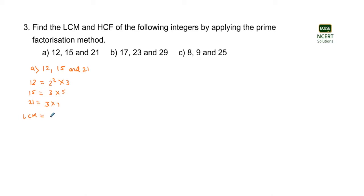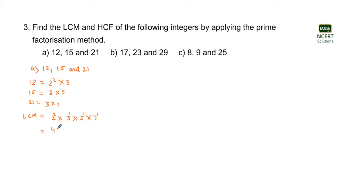The unique prime factors of the three numbers are 2, 3, 5, and 7, each raised to their maximum power. The maximum power of 2 is 2; for 3 it is 1; for 5 it is 1; and for 7 it is also 1. The product of these four terms comes out to be equal to 420.